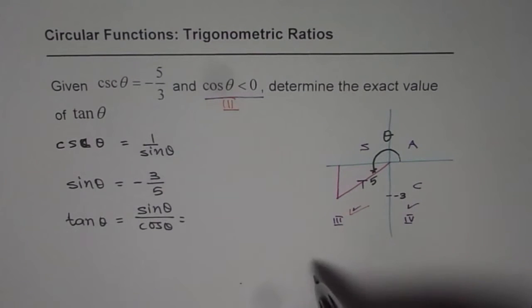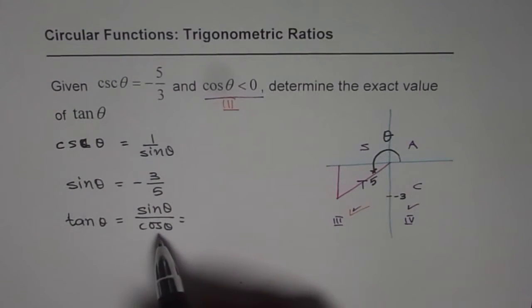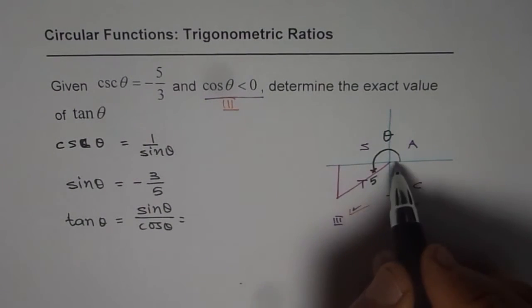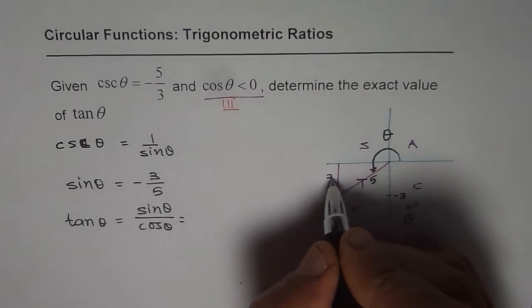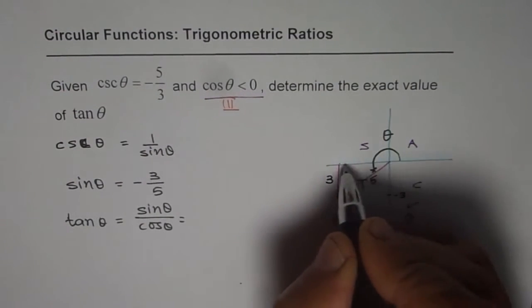And you know tan theta is positive here. Now to find cosine theta, I should know the base. So we know this side is 3, this is 5. So how much is the adjacent side?